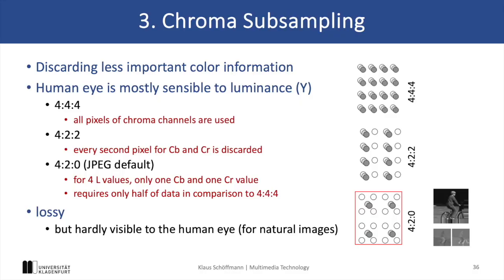The three numbers represent luminance and chrominance components, and express how many values are sampled for Y, Cb, and Cr. So for example, 4:4:4 means that for 4 luminance values we also sample 4 Cb and 4 Cr values, while 4:2:2 means that we would only sample 2 Cb and 2 Cr values. Finally, 4:2:0 means that for 4 luminance values we only sample 1 Cb and 1 Cr value.